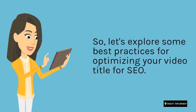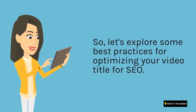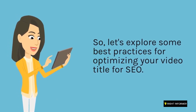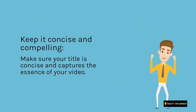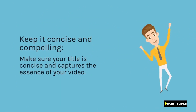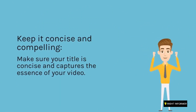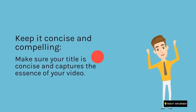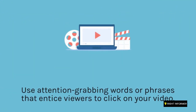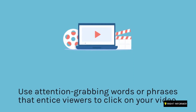Let's explore some best practices for optimizing your video title for SEO. Keep it concise and compelling — make sure your title is concise and captures the essence of your video. Use attention-grabbing words or phrases that entice viewers to click on your video.